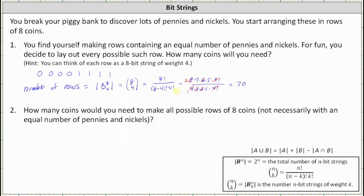So remember, this is the number of rows, not the number of coins, and the question asks how many coins? And because each row has eight coins, the number of coins is equal to 70 times eight, which is equal to 560.